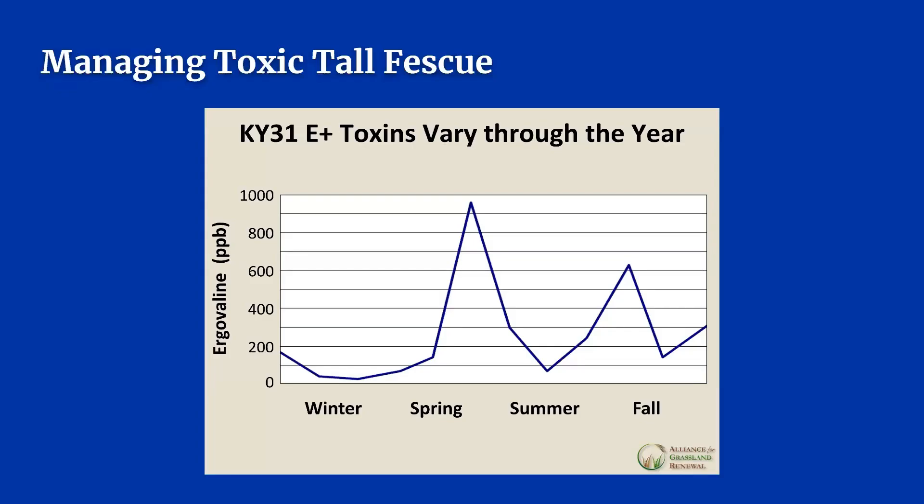A major part of preventing fescue toxicosis has to do with proper management of toxic or infected tall fescue pastures. Assume your pasture has toxic Kentucky 31 fescue unless you have planted a new variety in recent years. To properly manage infected pastures, you must know when the concentrations of toxins within the plant are highest. As you can see from this graph, ergovaline levels peak during late spring and early summer, including the months of late April, May, and June. There is another spike around November in the fall.